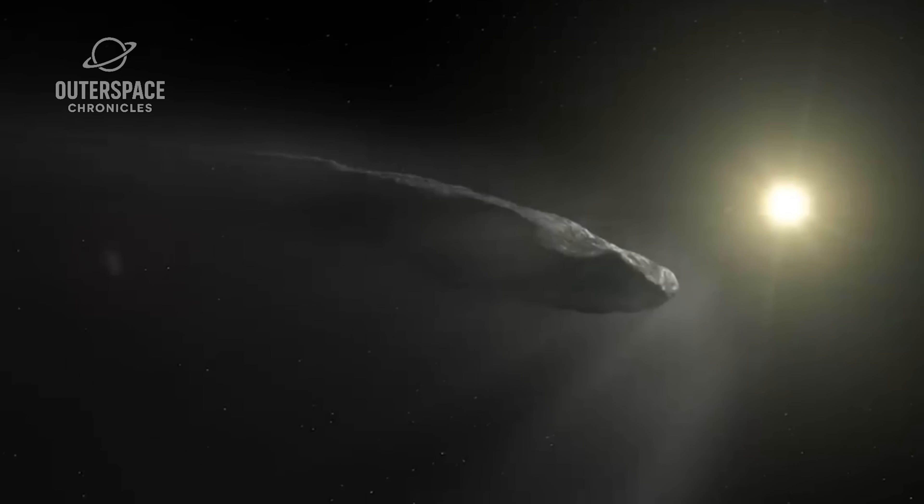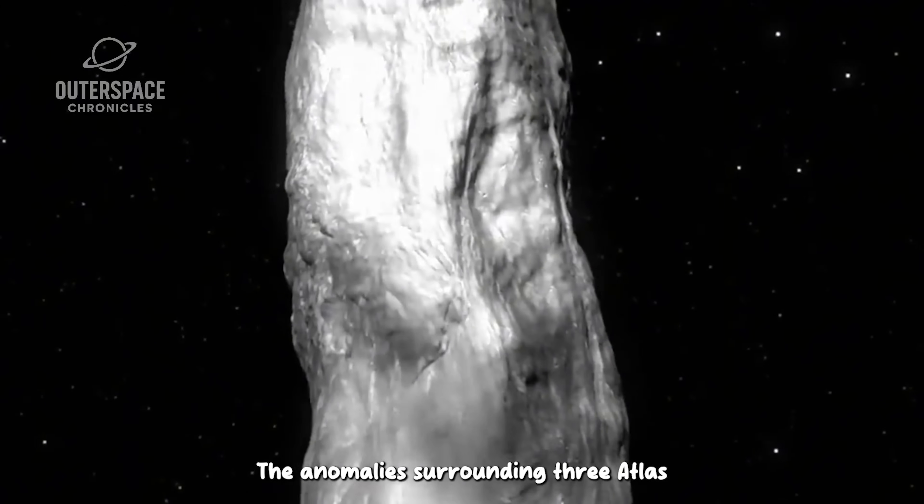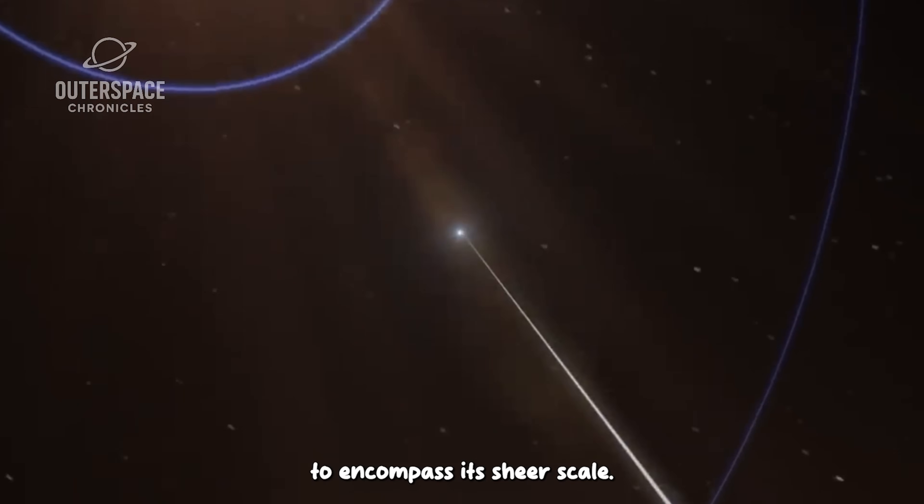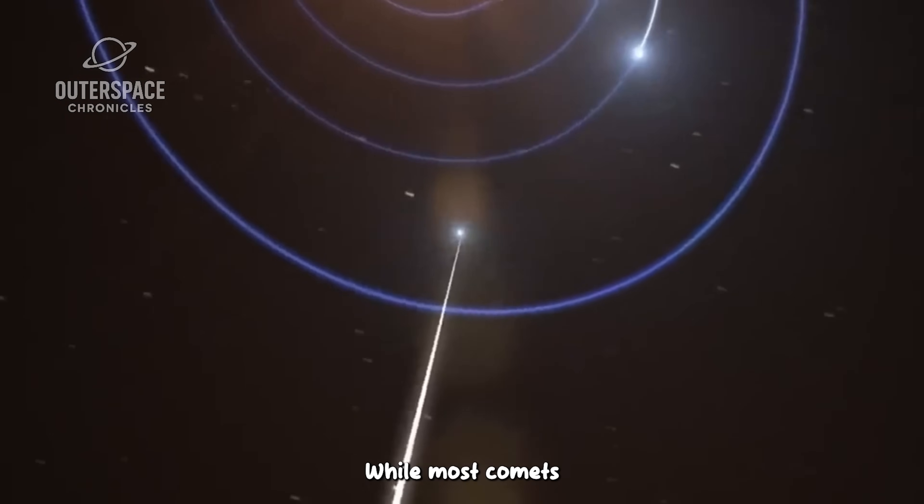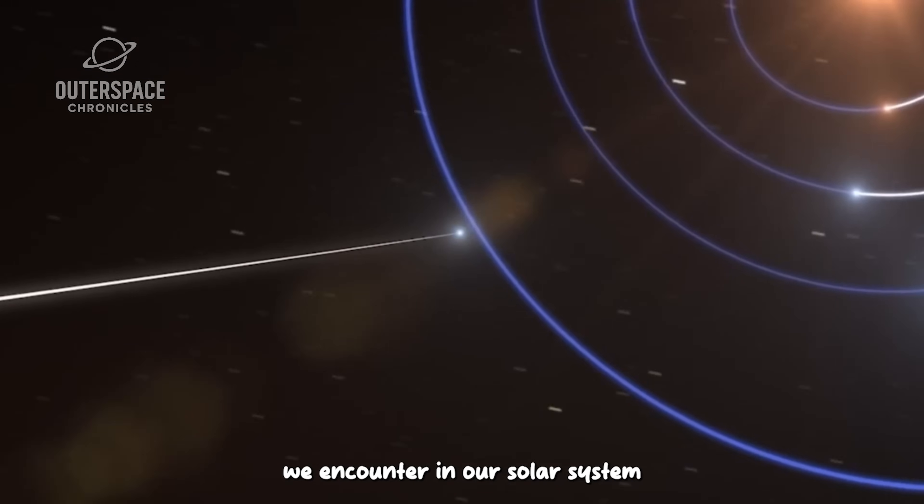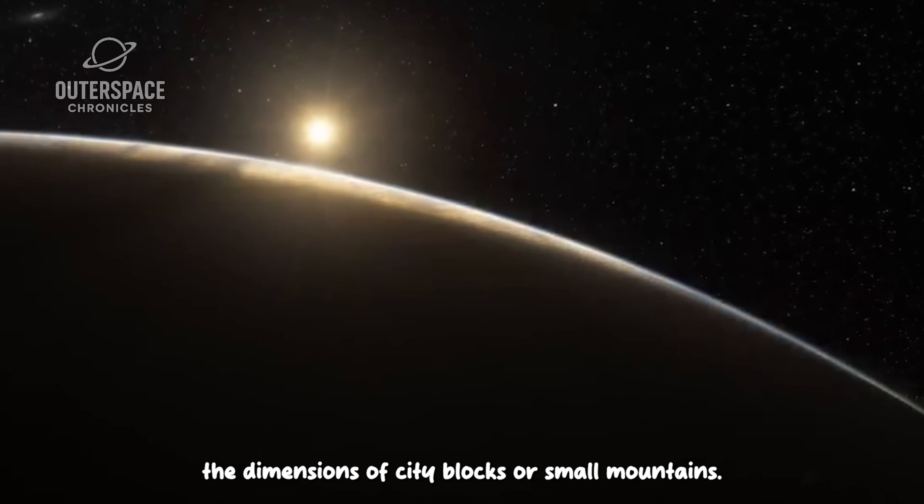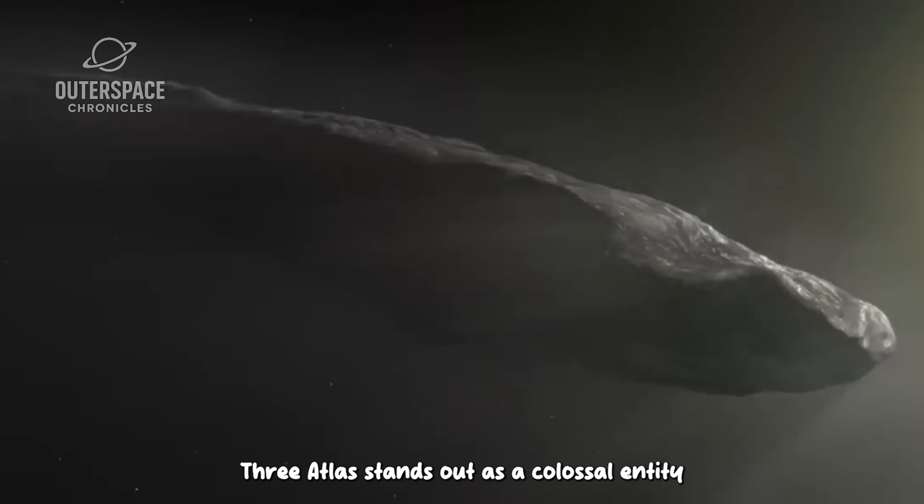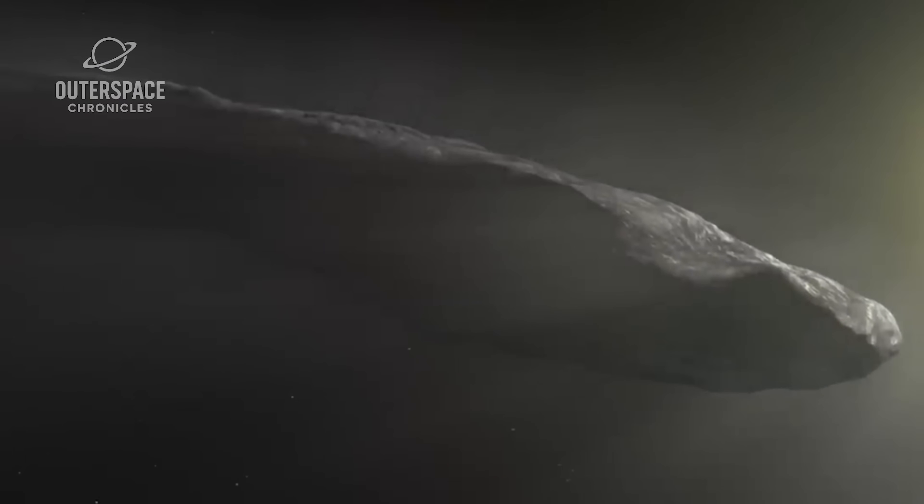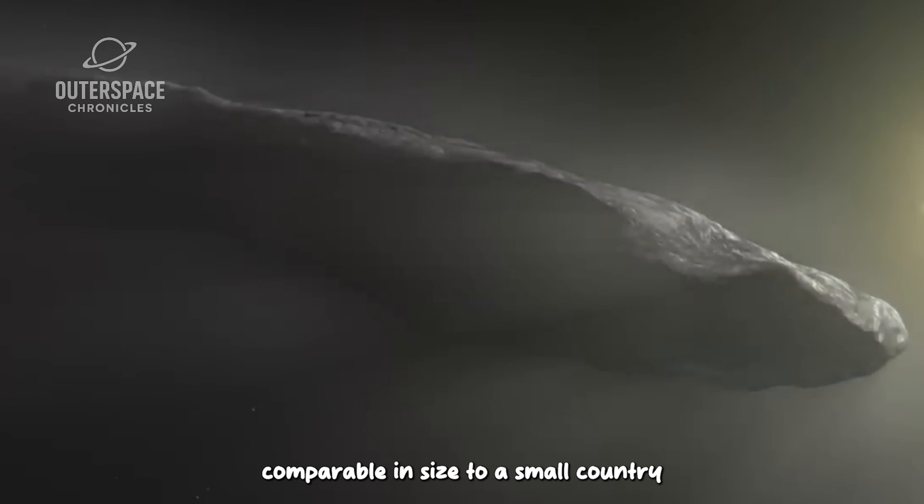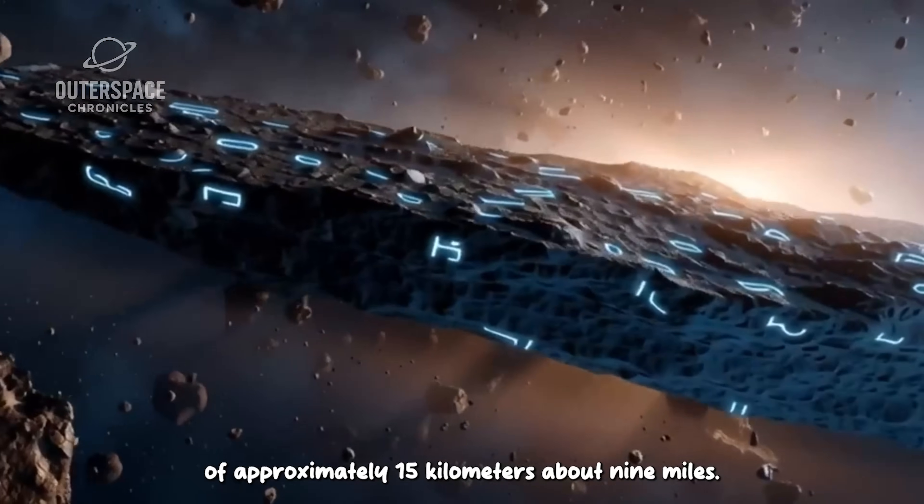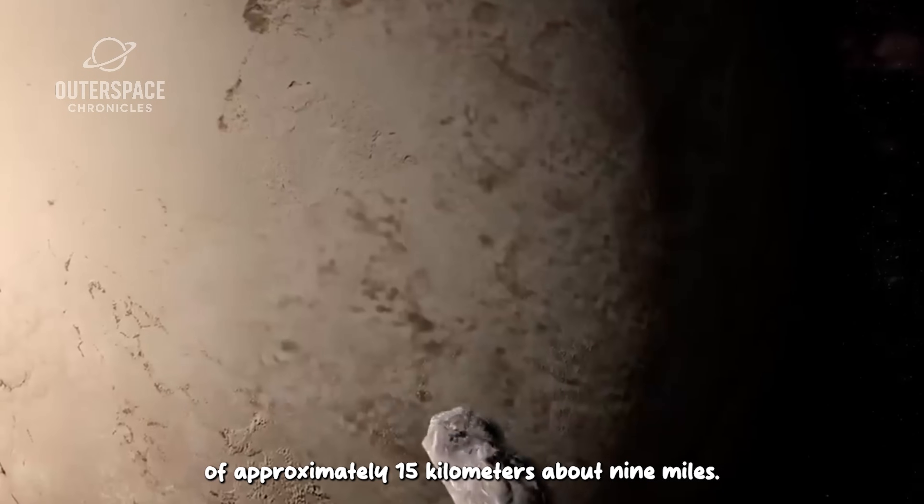The anomalies surrounding 3I Atlas extend beyond its unusual chemistry to encompass its sheer scale. While most comets we encounter in our solar system are roughly the dimensions of city blocks or small mountains, 3I Atlas stands out as a colossal entity, comparable in size to a small country, with an estimated diameter of approximately 15 kilometers, about 9 miles.